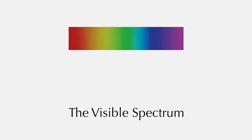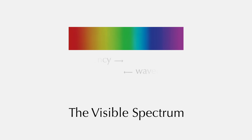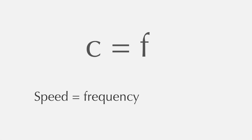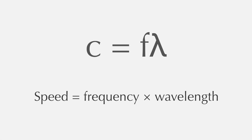Wavelength is actually inversely proportional to frequency. When one goes up, the other goes down. This is shown by a neat little equation that describes all types of EM radiation: speed equals frequency times wavelength.